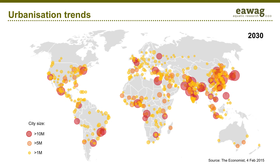Our future is urban. This map shows the cities planned to have more than 1 million inhabitants in 2030. Although the number of megacities is increasing, most population growth is taking place in secondary towns. How many of these do you have in your country?